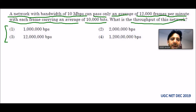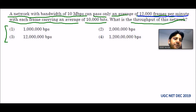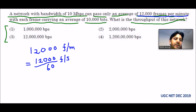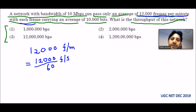The network is given as passing 12,000 frames per minute — this is the actual frames per minute. So 12,000 frames per minute equals 12,000 divided by 60 seconds, which gives us 200 frames per second. Each frame carries an average of 10,000 bits.